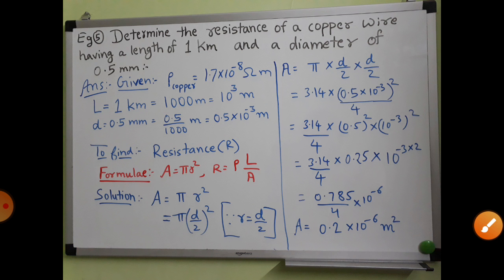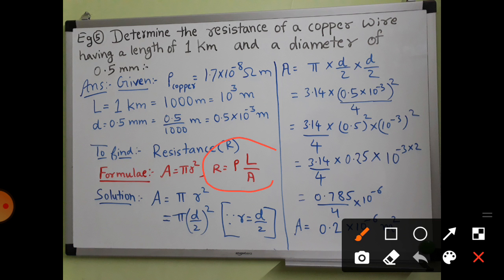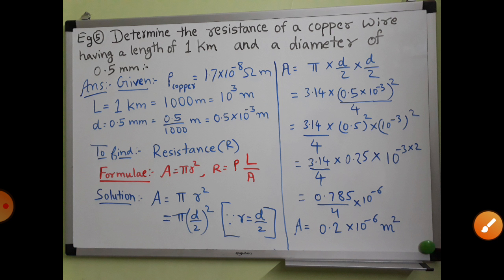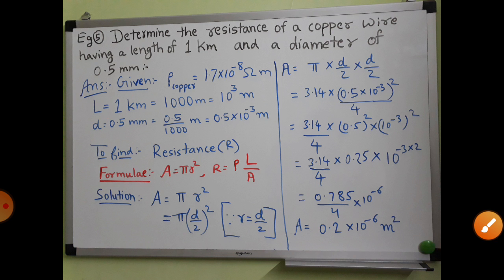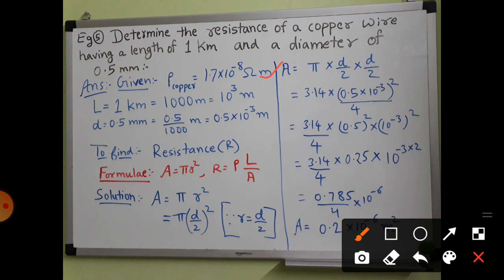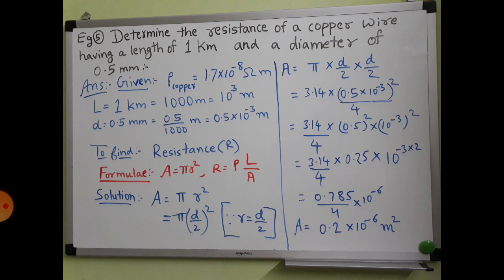Now you have to find the resistance. The resistance formula is R = ρl/A, where ρ means resistivity of copper, l means length, and A means area. Length is given as 10³ meters and ρ is given, but area is not given. So first you have to find the area.